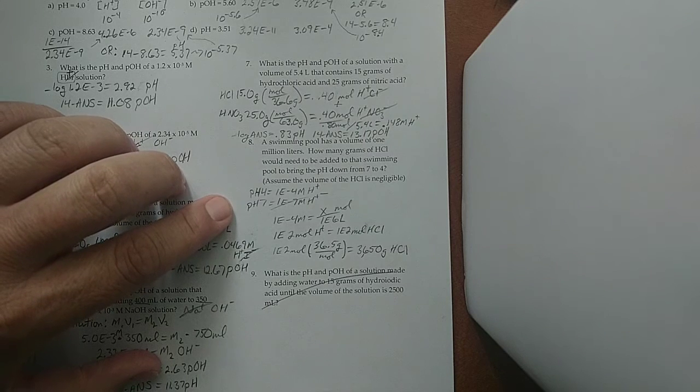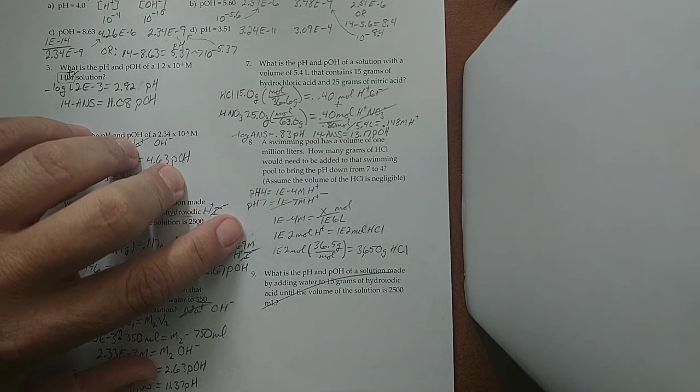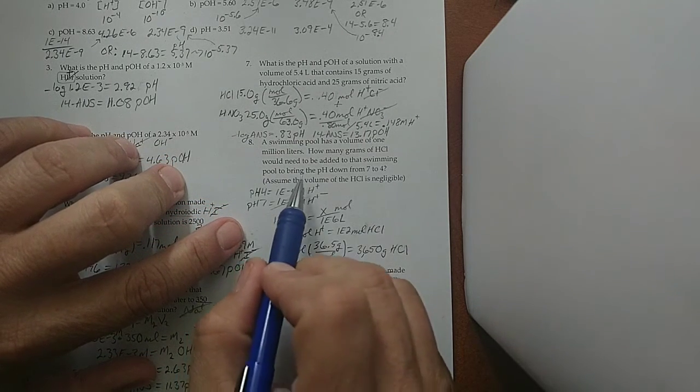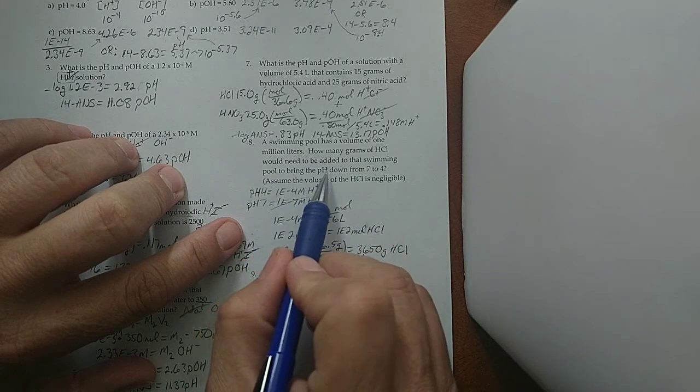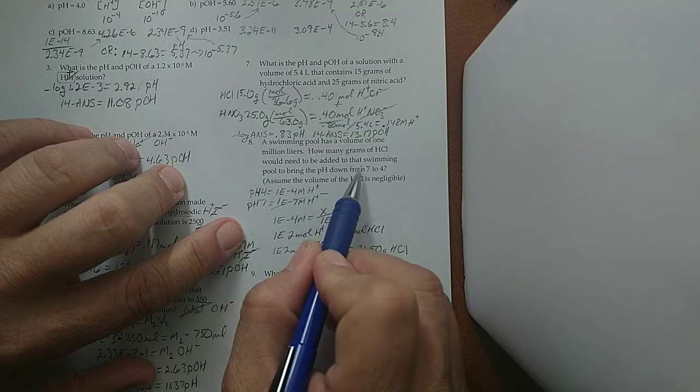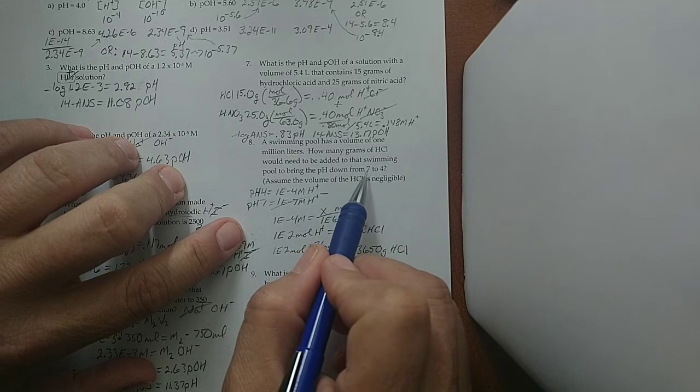On number 8, we're going to get even a little more tricky. How many grams of HCl would be needed to be added to the swimming pool to bring the pH down from 7 to 4?